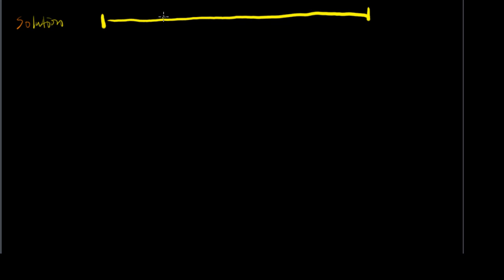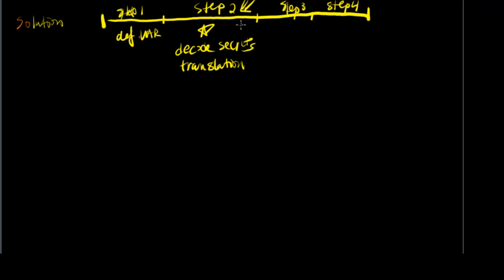So in the first step, which we're going to repeat for the next few clips as well, step one is where we define the variable. Step two, which is the most important one, this is where we decode the secret, or in another word, we translate the words into equations. Step three and step four is not nearly as important as step two. Word problems are all about step two.